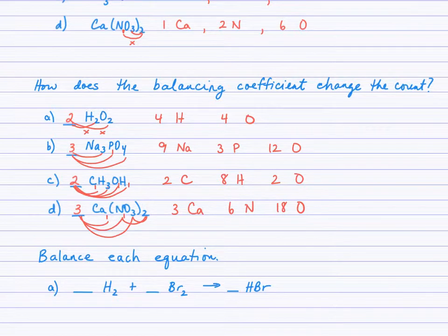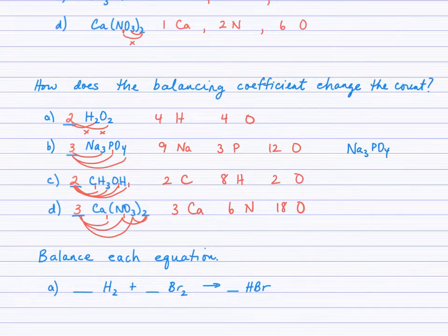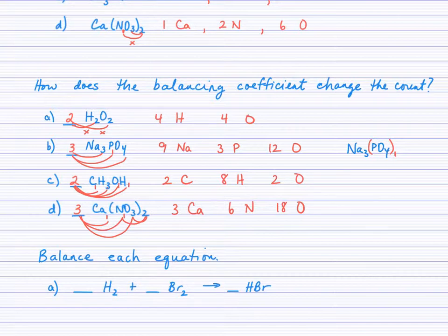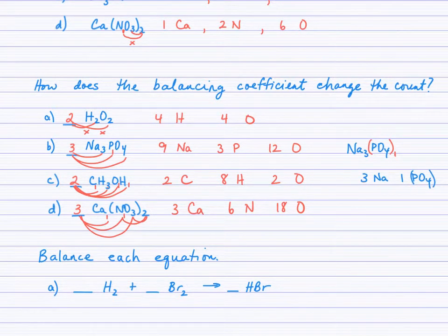A comment about sodium phosphate, Na3PO4: these compounds often appear in double displacement reaction patterns, where the phosphate group PO4 stays together as a unit on both sides of the arrow. So it may be helpful to think of this as 3 Na and 1 PO4 — one group of PO4. If it is a double displacement reaction and that polyatomic ion stays together, you may find that approach easier.